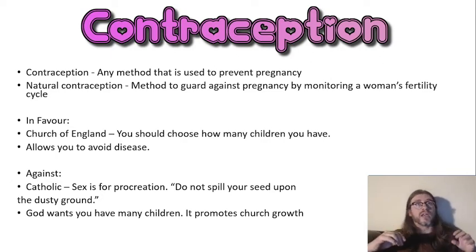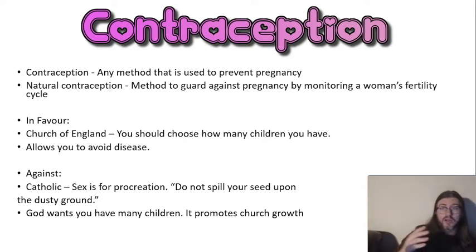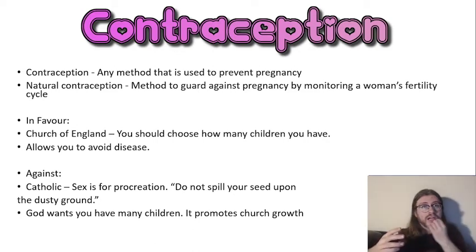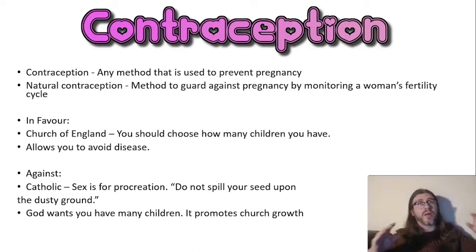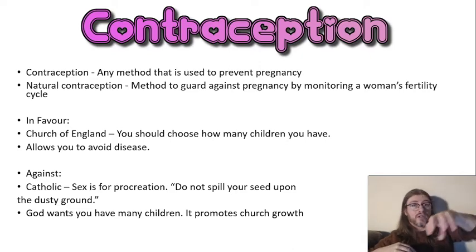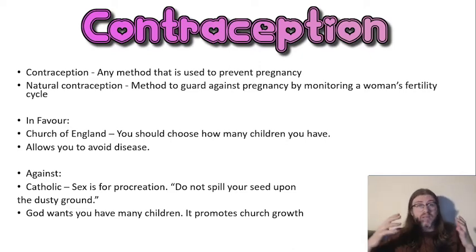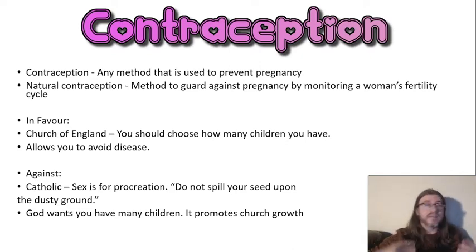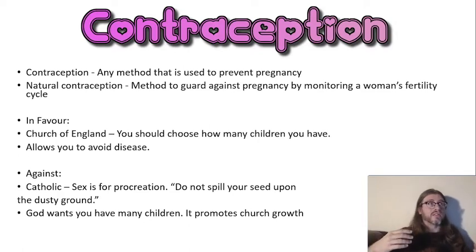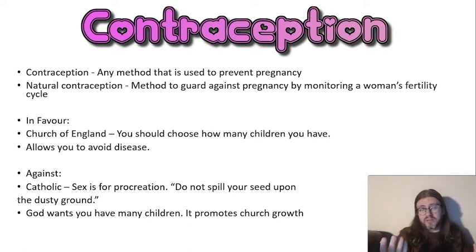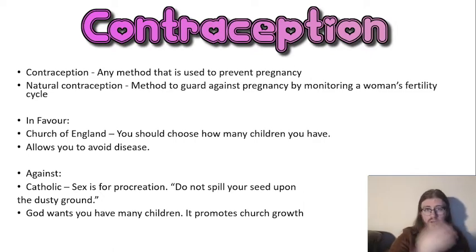The other natural method is the rhythm method. A woman looks at her cycle and works out when she is least likely to get pregnant - for example on certain days of the month - and they have sex on those days. It's a good plan, not always 100% successful because bodies don't work like clockwork.